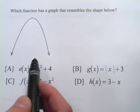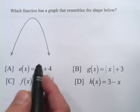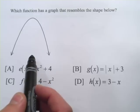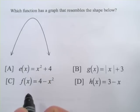right, where you have an x squared. But this is upside down. So how does that happen? Well, that happens when there is a negative sign in front of the x squared.